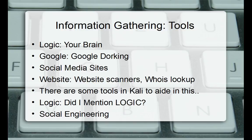Also do a WHOIS lookup on their domain name. If they have acme-inc.com, do a WHOIS search right in Kali Linux terminal or via a web page. See who it's registered to — you might find a technical contact with an email address and telephone number. Name servers also come up. If they're hosting on GoDaddy or something like that, you could do a dig on the DNS servers and come up with other sites.